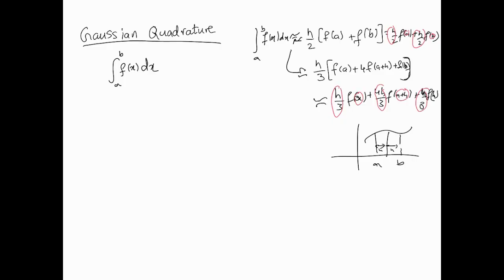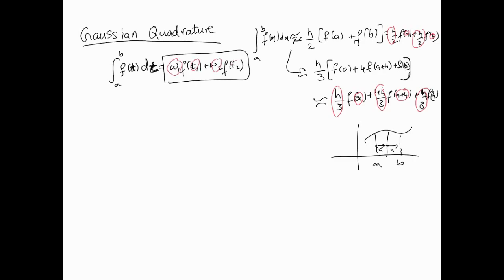Gaussian quadrature works differently. It says: why don't we use something like w1·f(t1) + w2·f(t2)? We'll call it a rule, changing the variable to t, and integrate over t. Comparing this to the trapezoidal and Simpson's rules, what we're saying is: let's leave these points and weights free rather than fixing them in advance.